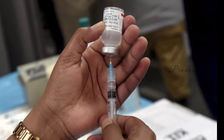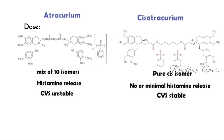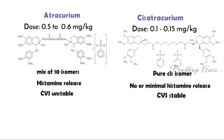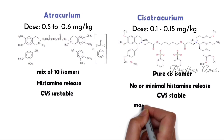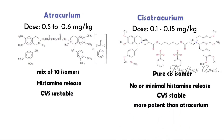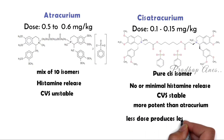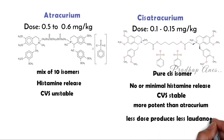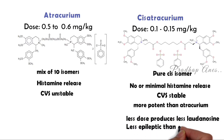Now coming to the dose — Atricurium dose is 0.5 to 0.6 mg per kilogram. Cisotricurium dose is 0.1 to 0.15 mg per kilogram. It is 5 times more potent than Atricurium. This lower dose produces less byproduct Laudanosine, so the chance of epilepsy is less when compared to Atricurium.